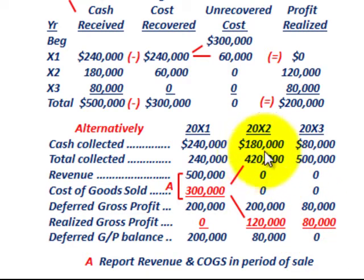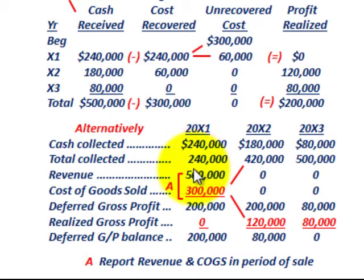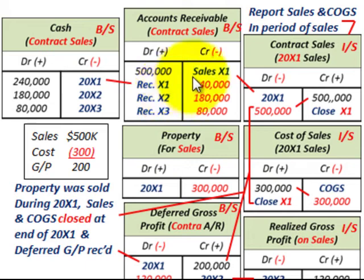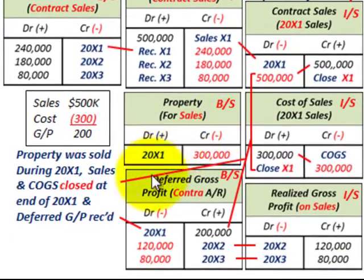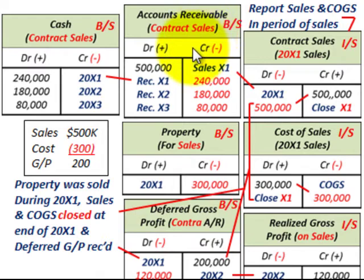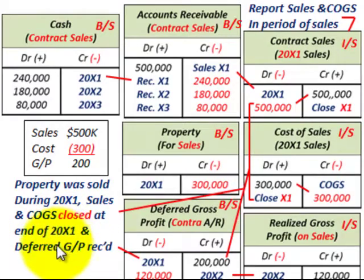We've looked at two different forms of calculating realized gross profit — the table at the top and the alternative method in the table at the bottom. Now let's look at how we'd record these entries in our accounts. We're going to concentrate on contract sales on our income statement, and how that interacts with cost of goods sold, deferred gross profit, and realized gross profit. The key point: our property was sold during 20x1, so our sales and cost of goods sold are going to be closed out at the end of 20x1 and we set up a deferred gross profit account.